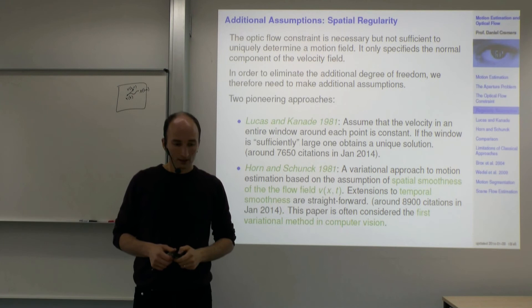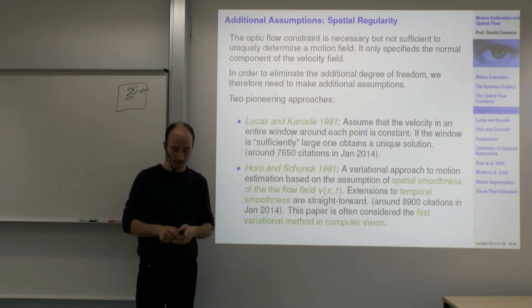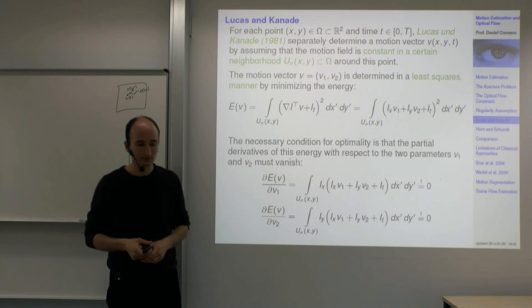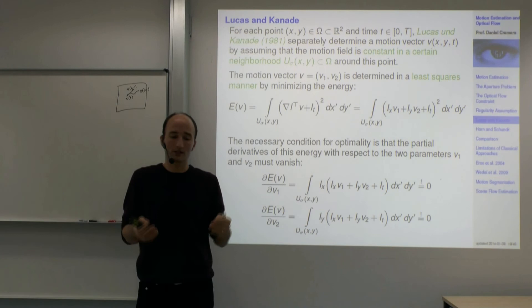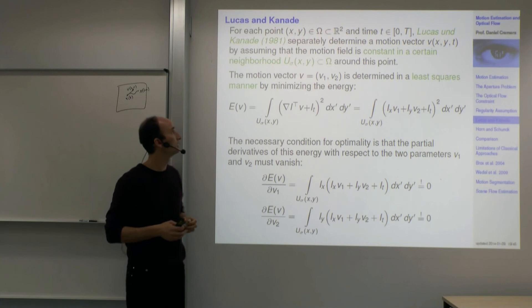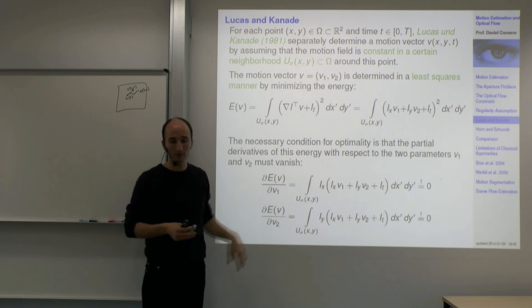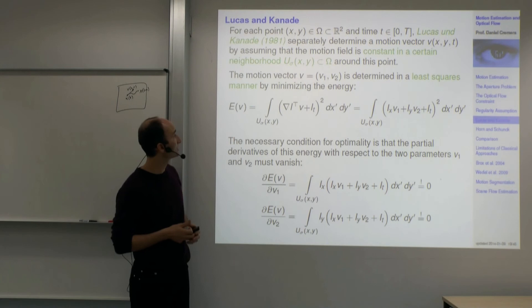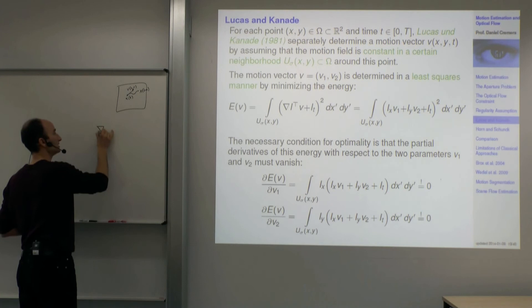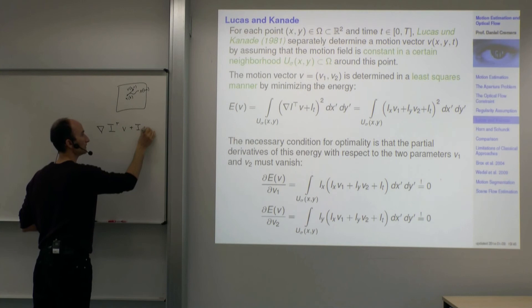We'll talk about both approaches. Starting with Lucas-Kanade: the nice thing is it's fairly easy to understand and you don't need variational methods or sophisticated math. The idea is simple: in addition to the brightness constancy constraint — ∇I^T · v + I_t = 0 for all pixels x — we assume that the velocity v is constant in an entire window around each pixel.